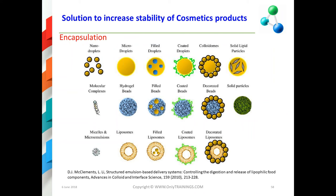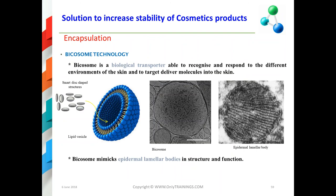Another way to stabilize some actives that can be destabilized easily is encapsulation. There are many forms of encapsulation, from nano droplets to micro droplets to solid-liquid particles, Pickering emulsions, and liposomes. In this slide, you have an image of different kinds of encapsulation technology. One of these technologies I will describe is the biposome technology.